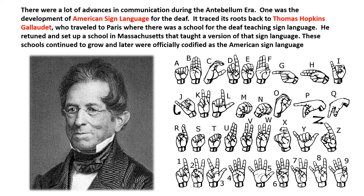There were a lot of advances in communication during the antebellum era. One was the development of American Sign Language for the deaf. It traced its roots back to Thomas Hopkins Gallaudet, who traveled to Paris, where there was a school for the deaf teaching a sign language. He returned and set up a school in Massachusetts that taught a version of that language. These schools continued to grow, and later Gallaudet's sign language became officially codified as American Sign Language.